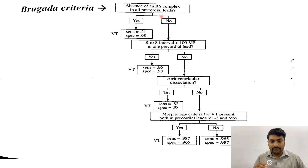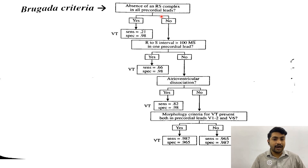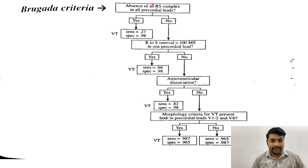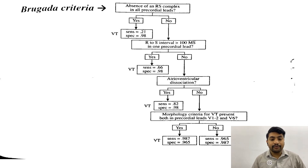In a normal ECG, one wave goes up and another goes down — the R wave goes up and the S wave goes down. But in the case of VT, there will always be either a positive deflection or a negative deflection. So if there is absence of an RS complex, that is definitely VT. If it is not, we go to the next step, because SVT with aberrancy is a diagnosis of exclusion.